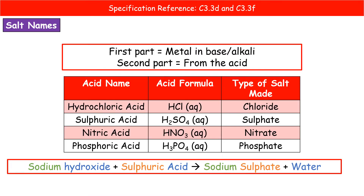That leaves us with the other ions — so we need to name our salt. Learn this table: these are the four acids and the endings for the salts you need to know. Hydrochloric acid always makes chloride; sulfuric acid makes sulfate; nitric acid makes nitrate; phosphoric acid makes phosphate. There's no quick way — you just have to learn it.